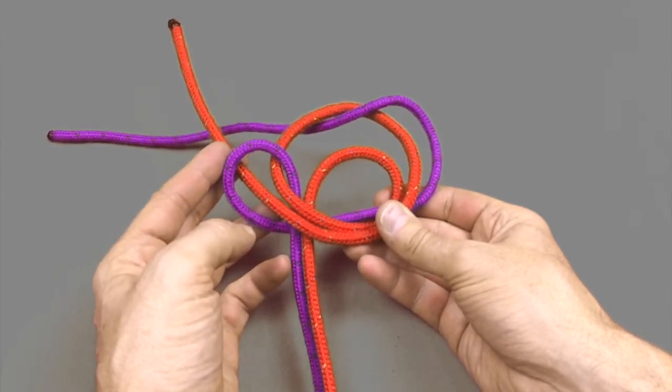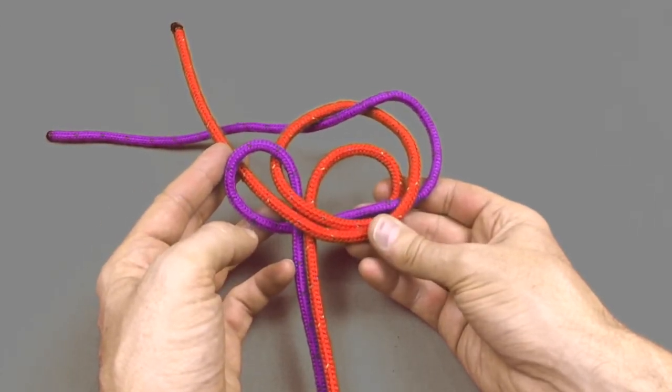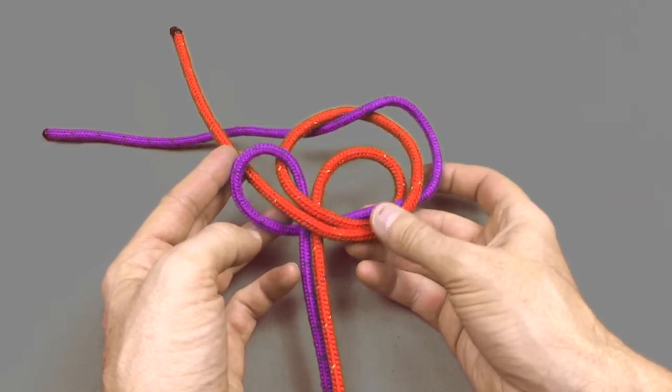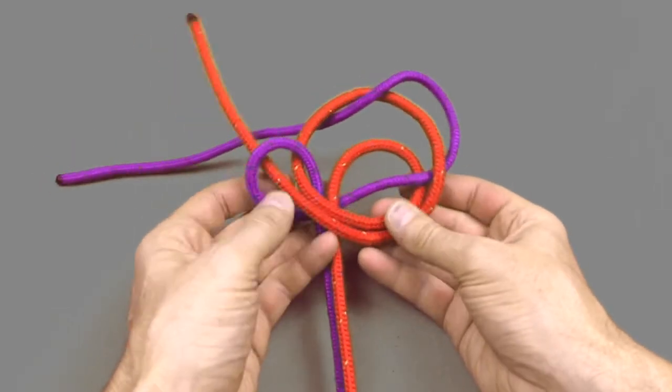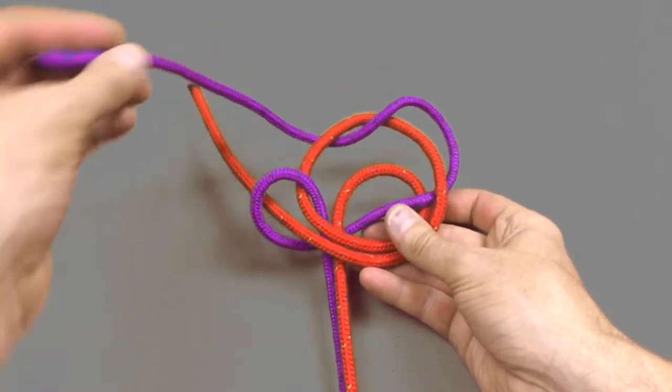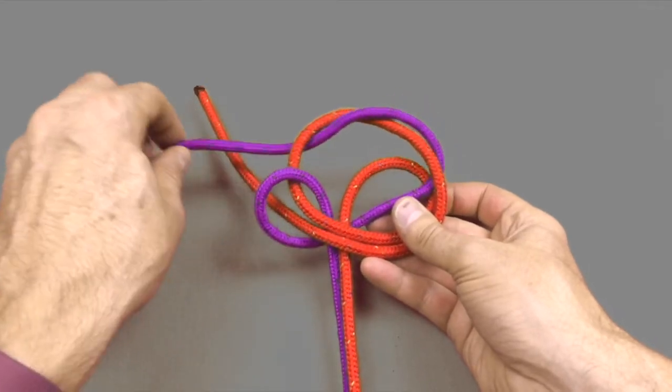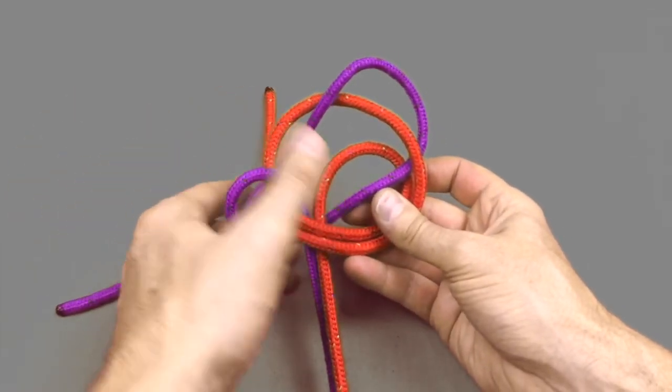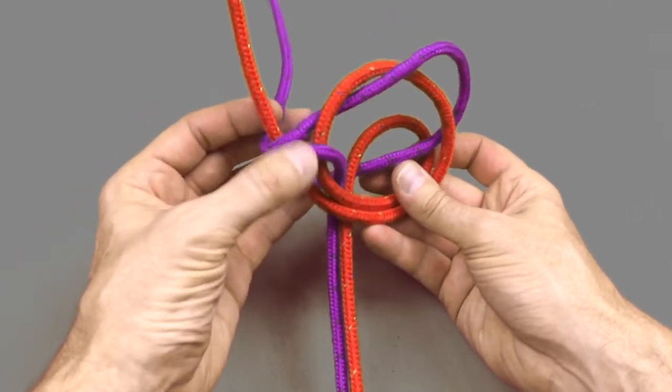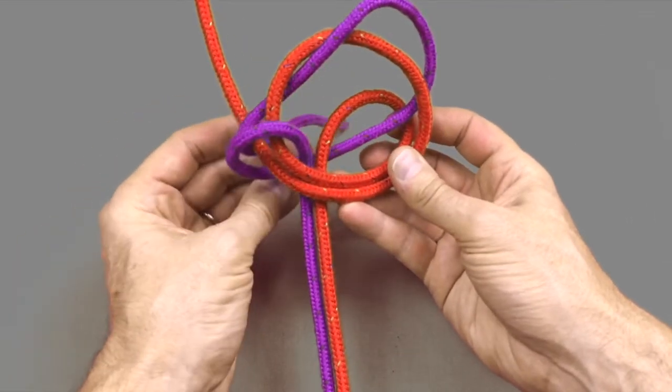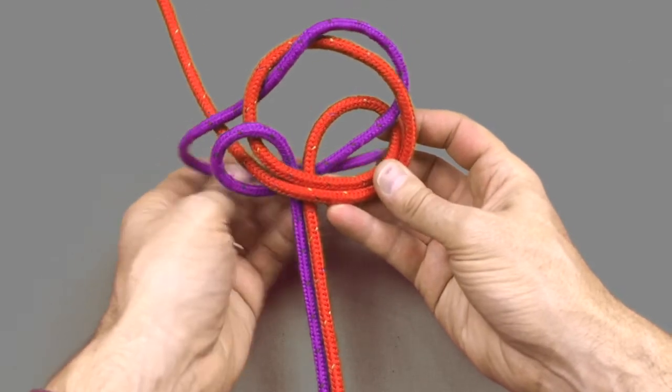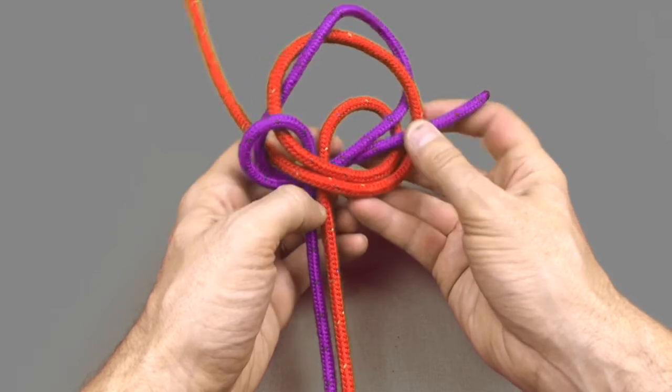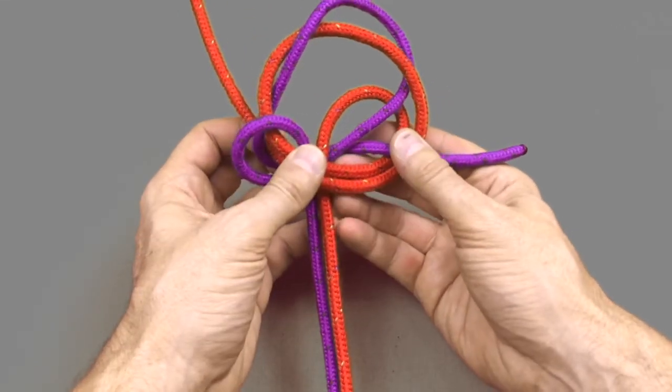To complete the second wall knot you're going to take the purple line, remembering to once again go in the clockwise direction, and we're going to take it over the top of the red line around the back and then up through the first red loop of the wall knot behind all of the other lines and then up through the hole once again running parallel to the cord from the first wall knot.